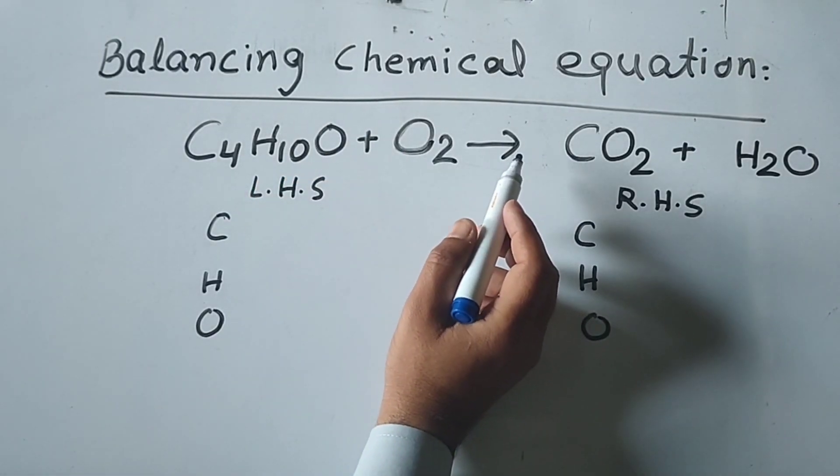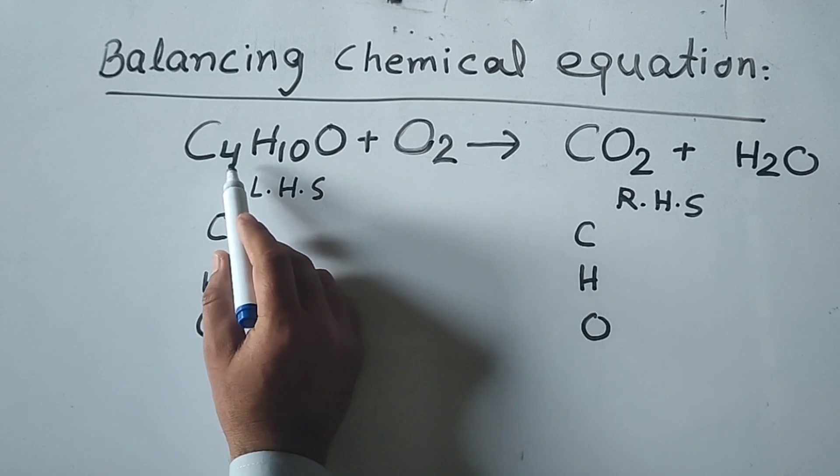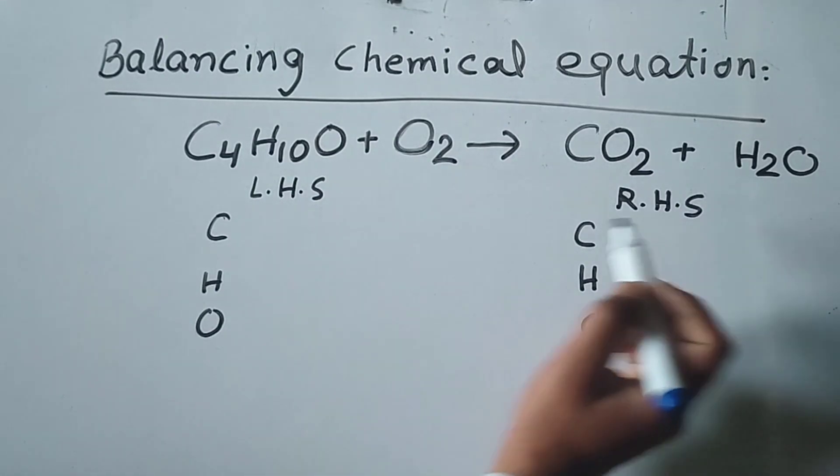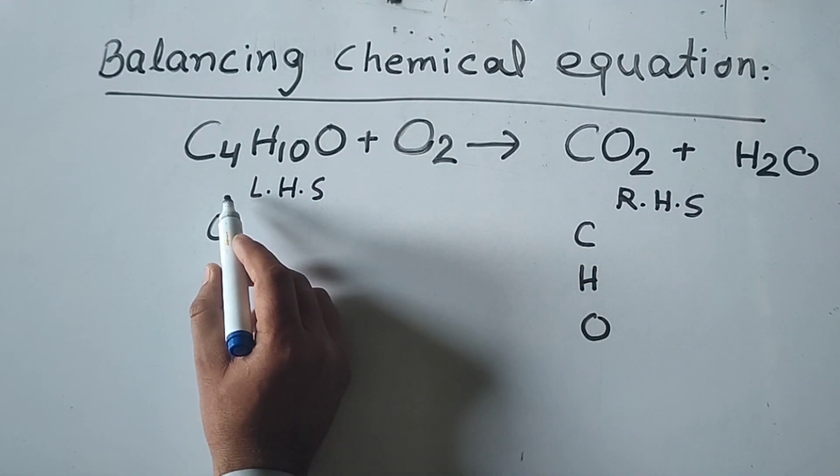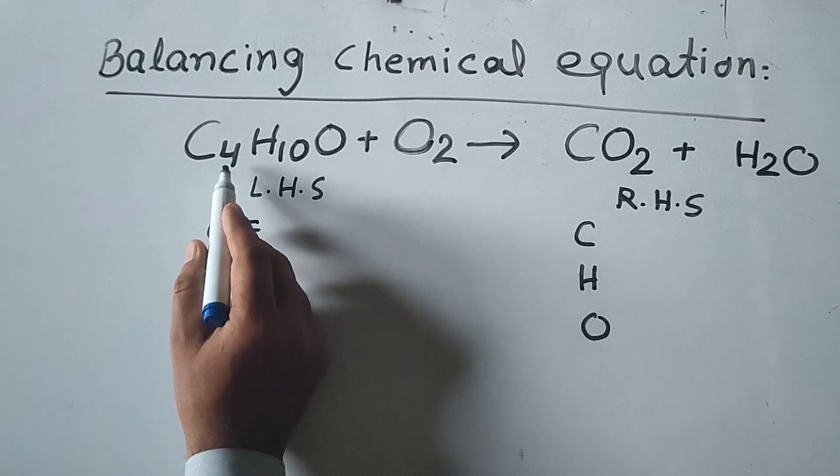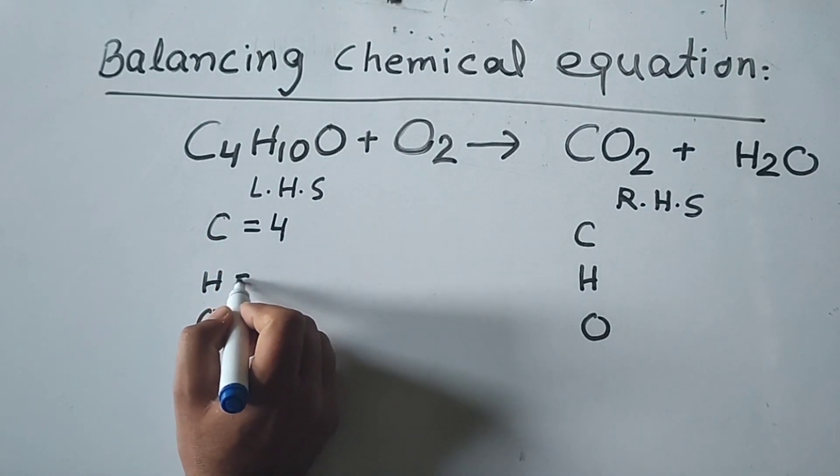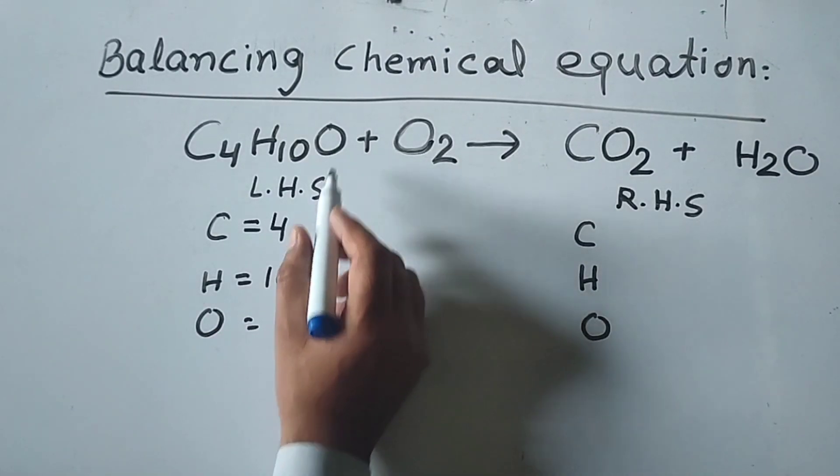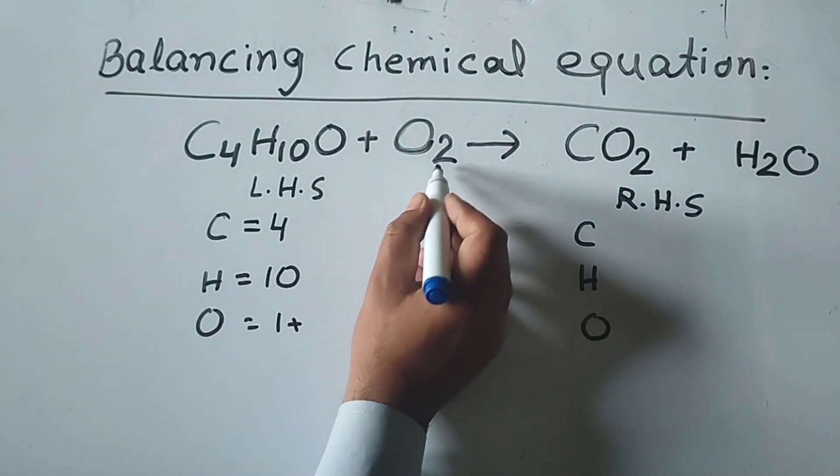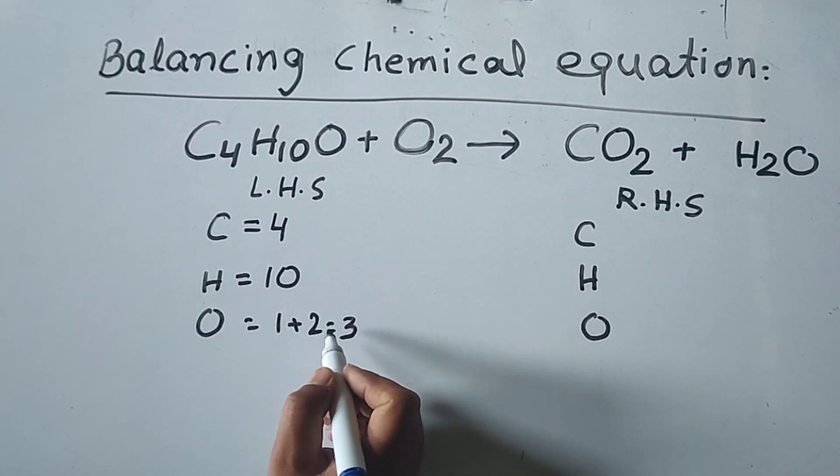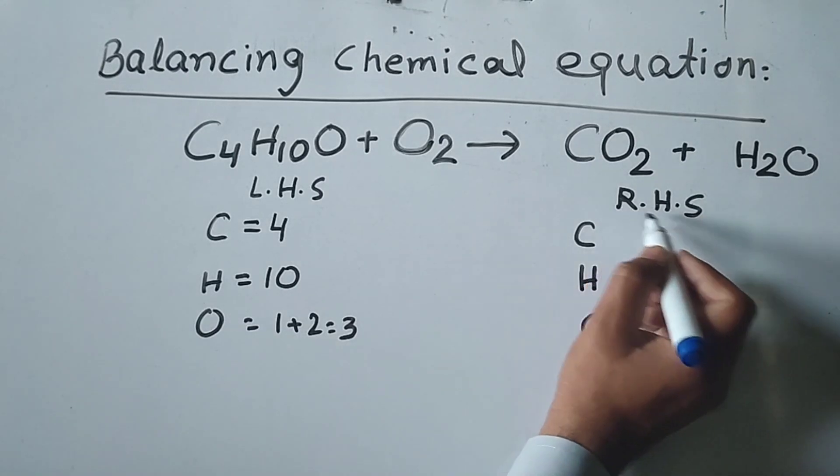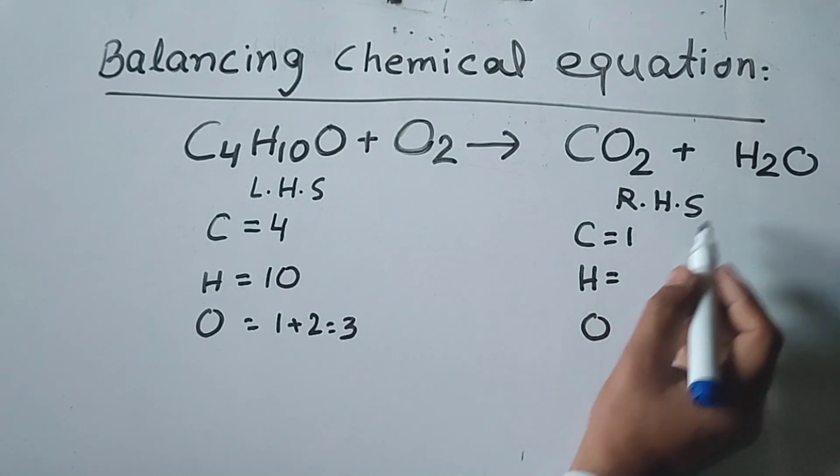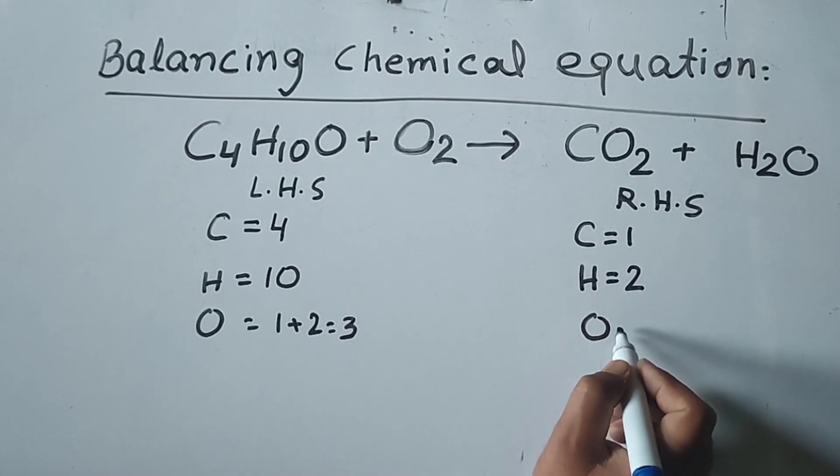Balancing the chemical equation: C4H10O with oxygen forms carbon dioxide and water. On the left-hand side, there are 4 carbon atoms, 10 hydrogen atoms, and 3 oxygen atoms (one in C4H10O and two in O2). On the right-hand side, the product side has 1 carbon atom, 2 hydrogen atoms, and 3 oxygen atoms.